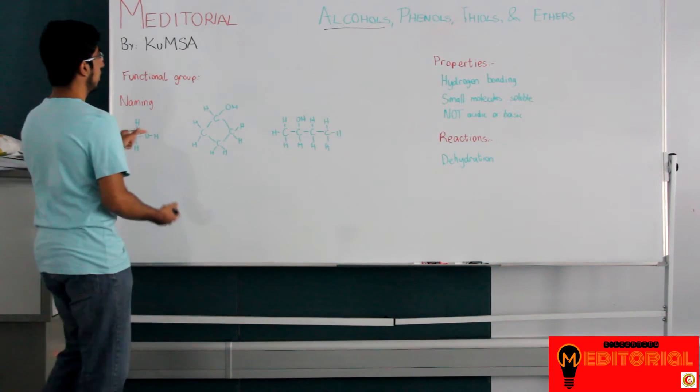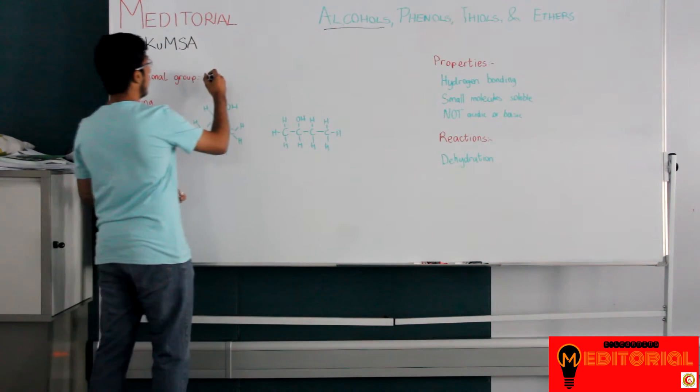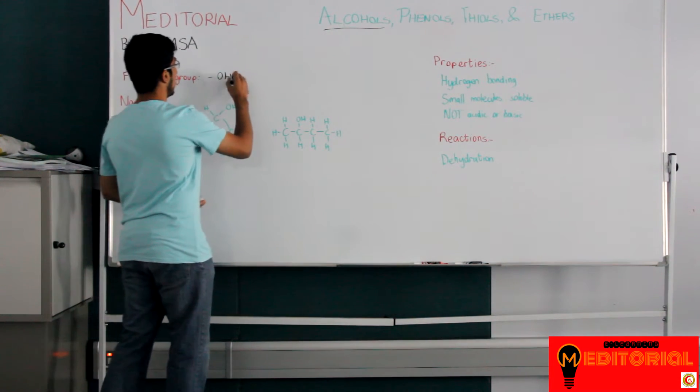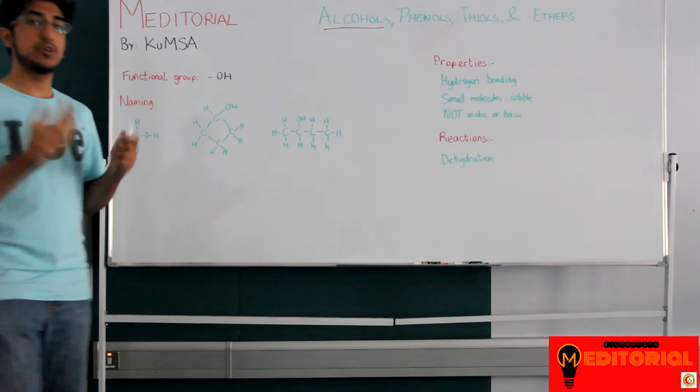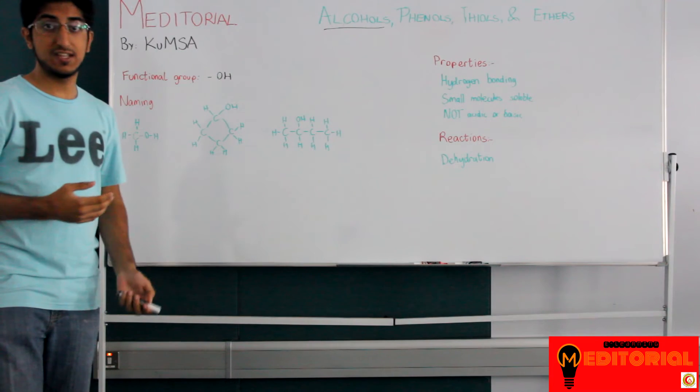So for alcohols, the functional group is a hydroxyl group, it's an OH. That's the functional group of alcohols. So if you see an organic molecule with an OH, you can automatically tell that this is an alcohol.